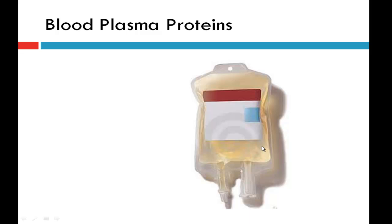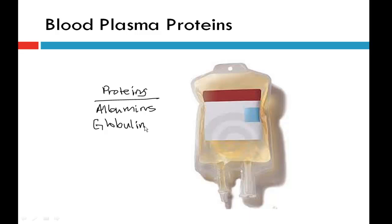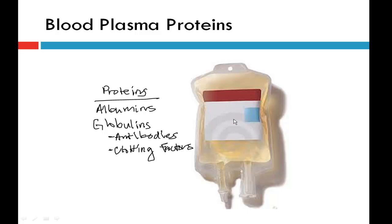Zooming in on blood plasma and its protein portion: there are two main types of proteins found in plasma that you would donate if you donate plasma. The first are albumins, which help keep the blood somewhat thickened and viscous so it's not too runny and dilute. The second type are globulins, of which there are two kinds: proteins that get converted into antibodies to fight off foreign invaders and viruses, and a series of proteins called clotting factors. If you need to receive plasma but not those clotting factors, centrifuging can remove them, and what's left is called serum rather than plasma.